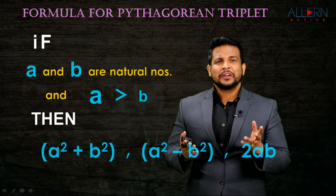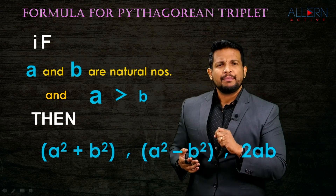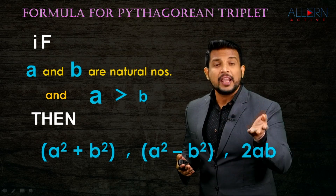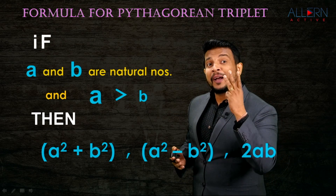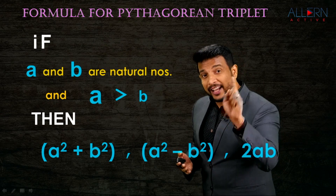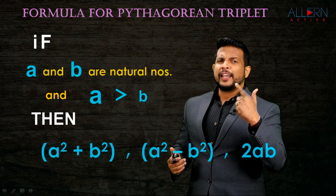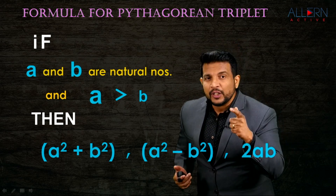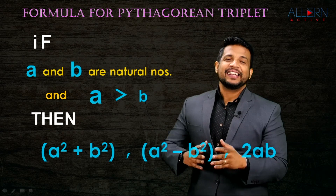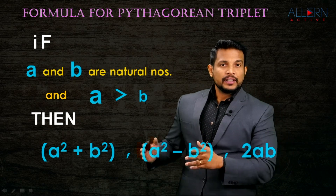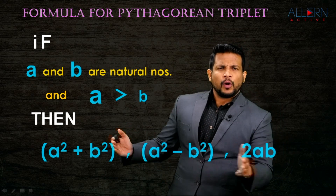So it's very simple. If we take any two natural numbers A and B where A is greater than B, then the three numbers in the Pythagorean triplet are: the largest is A²+B², the next is A²-B², and the third is 2AB. Now let's verify whether this formula is correct by checking whether these three form a Pythagorean triplet.